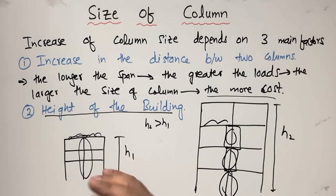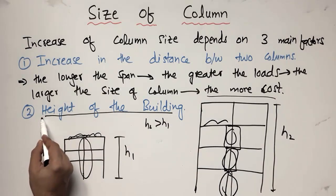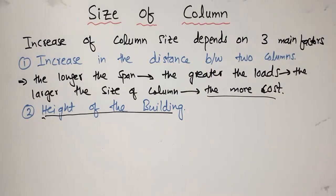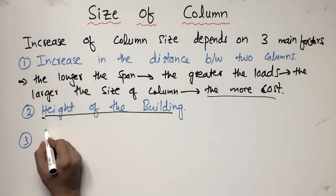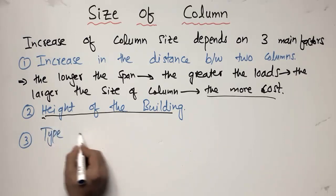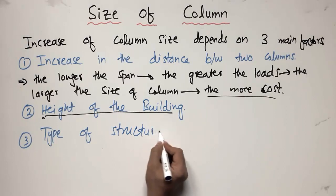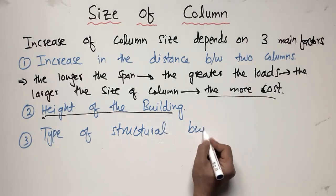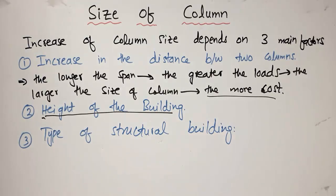So the second important factor that affects the increase in column size is the height of the building. The third factor that affects column size is the type of structural building.